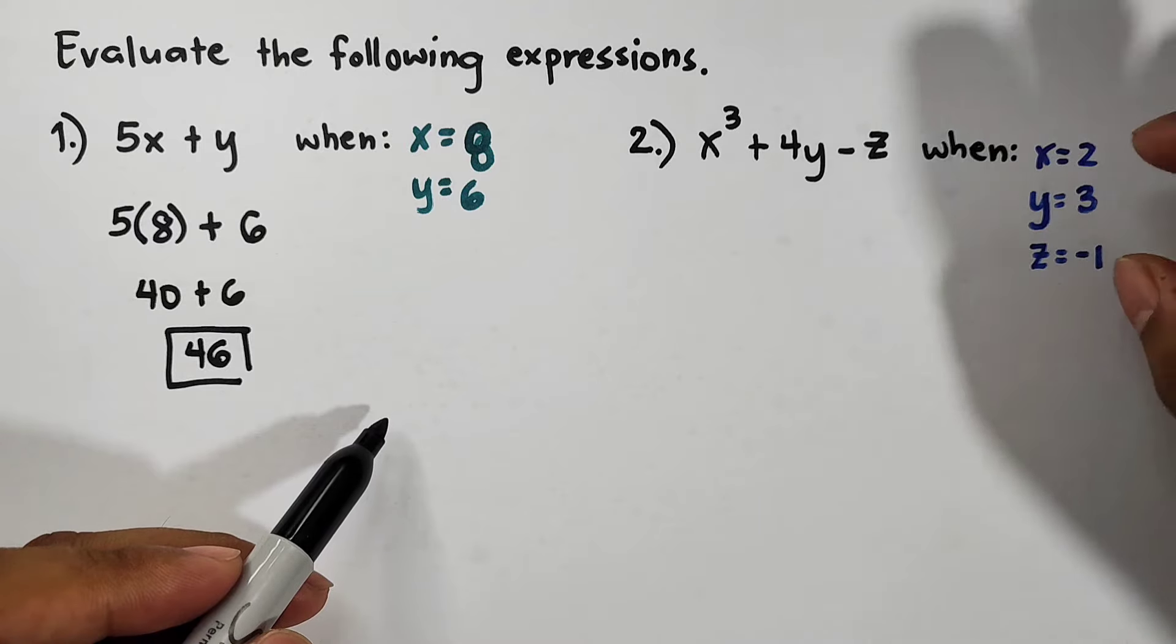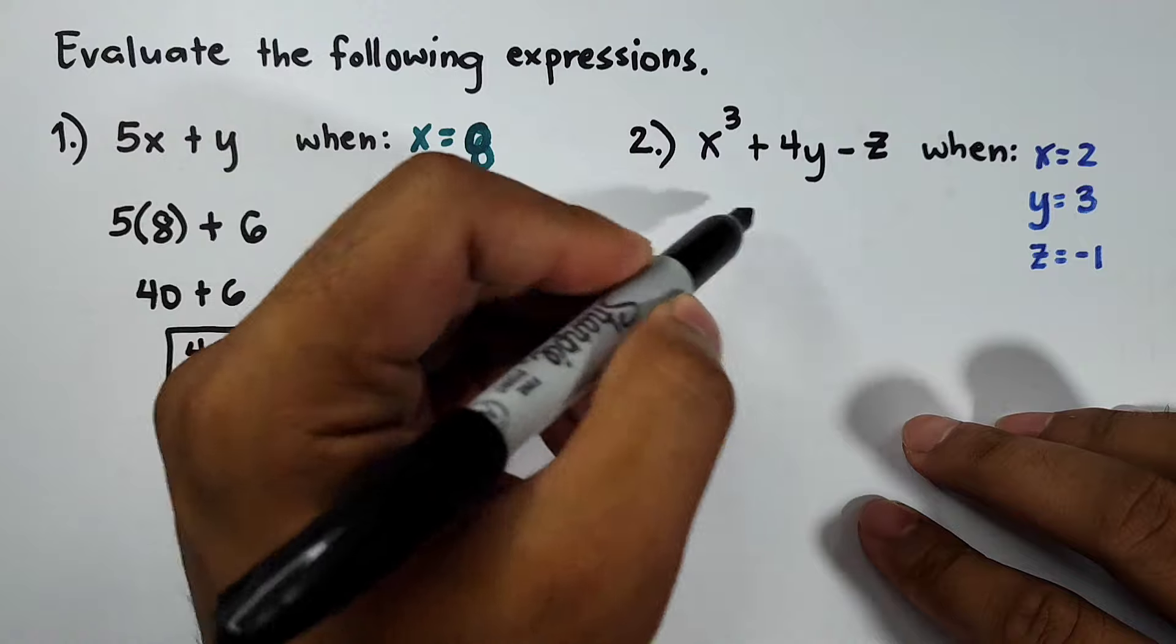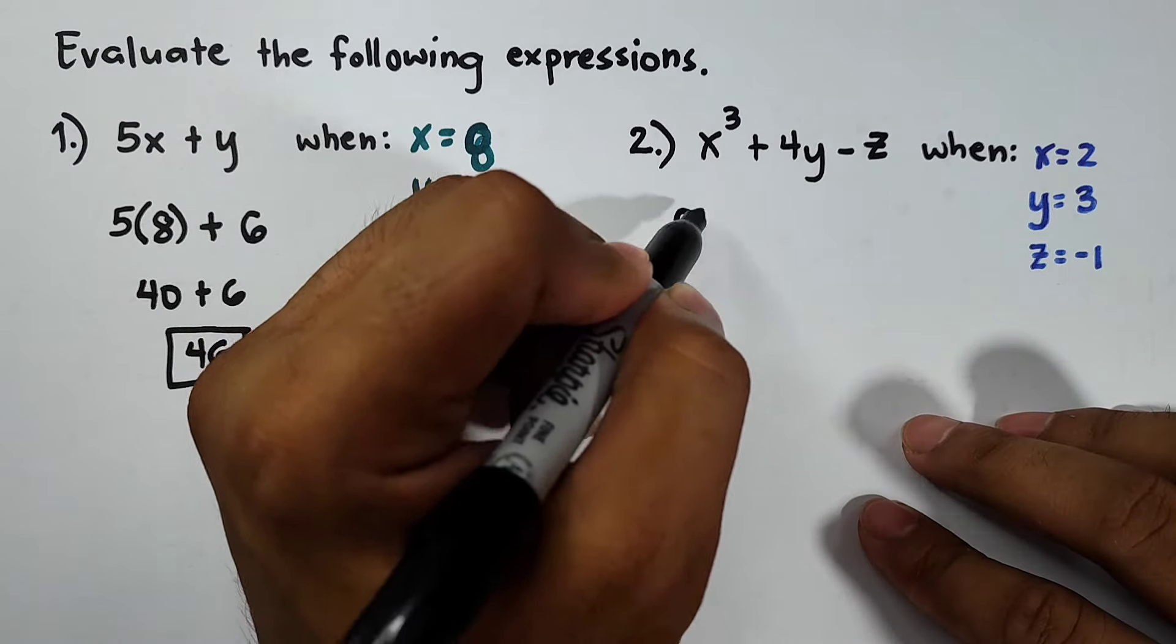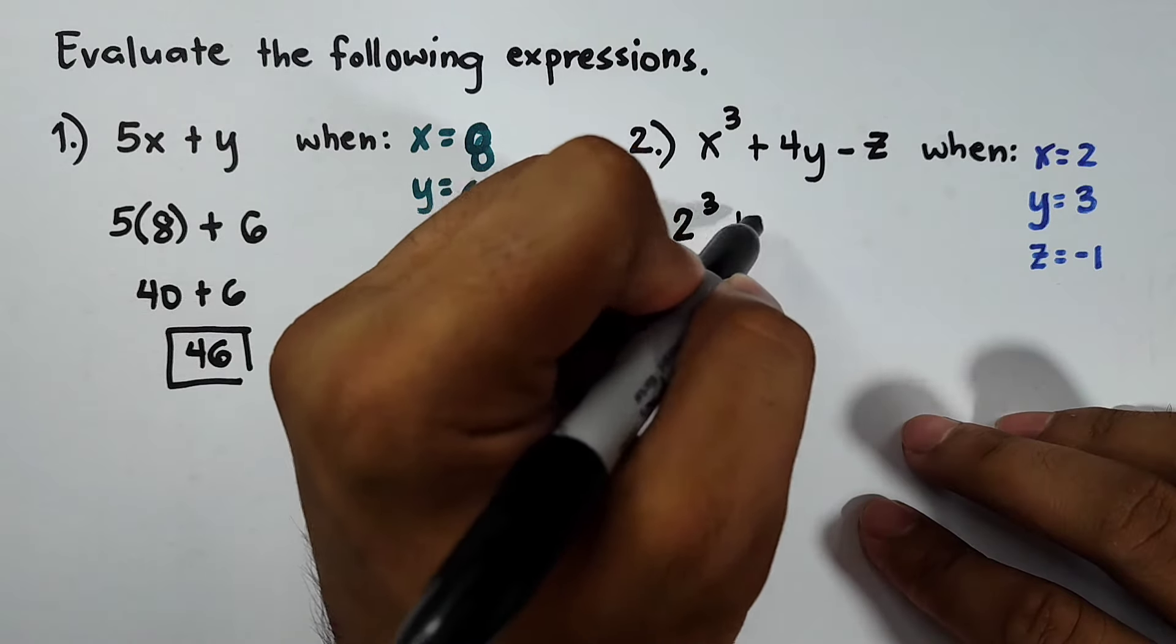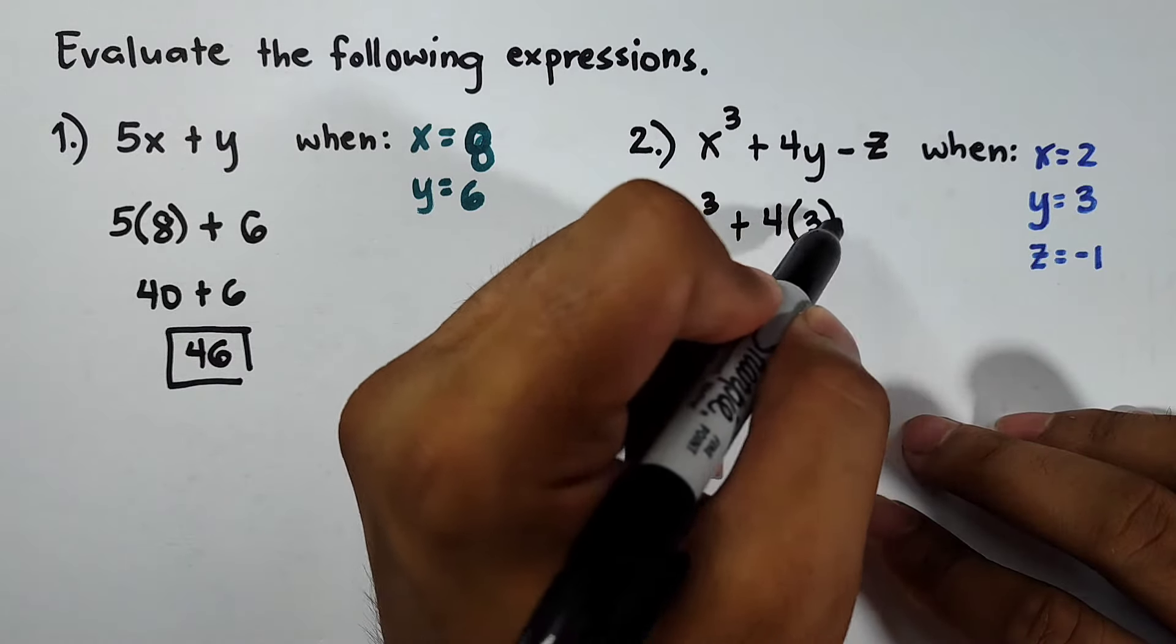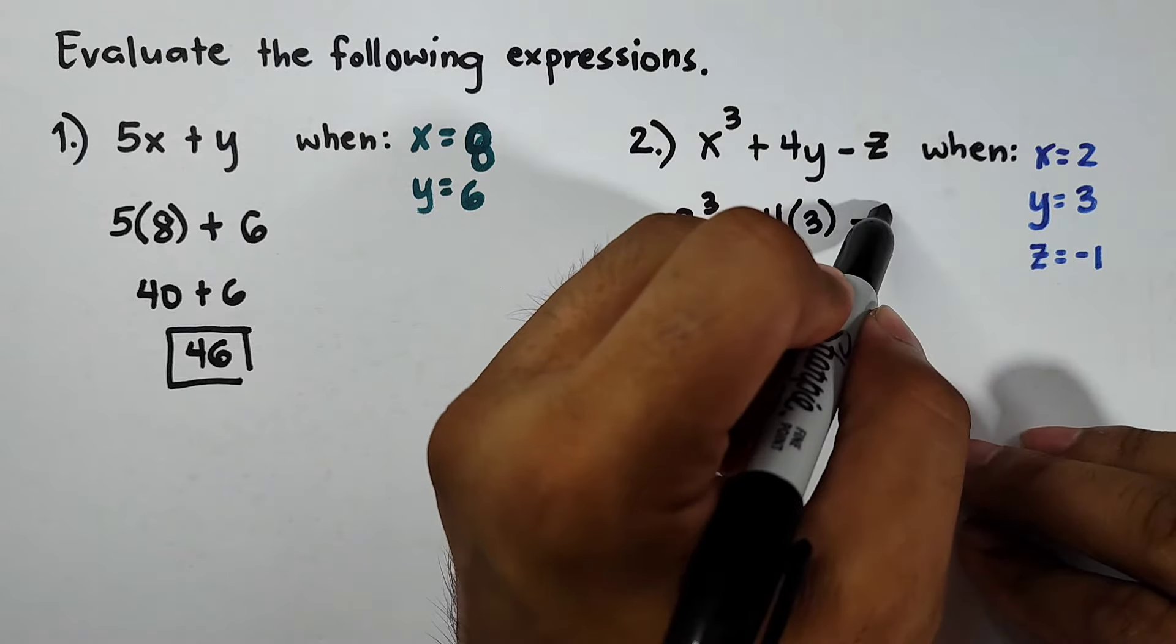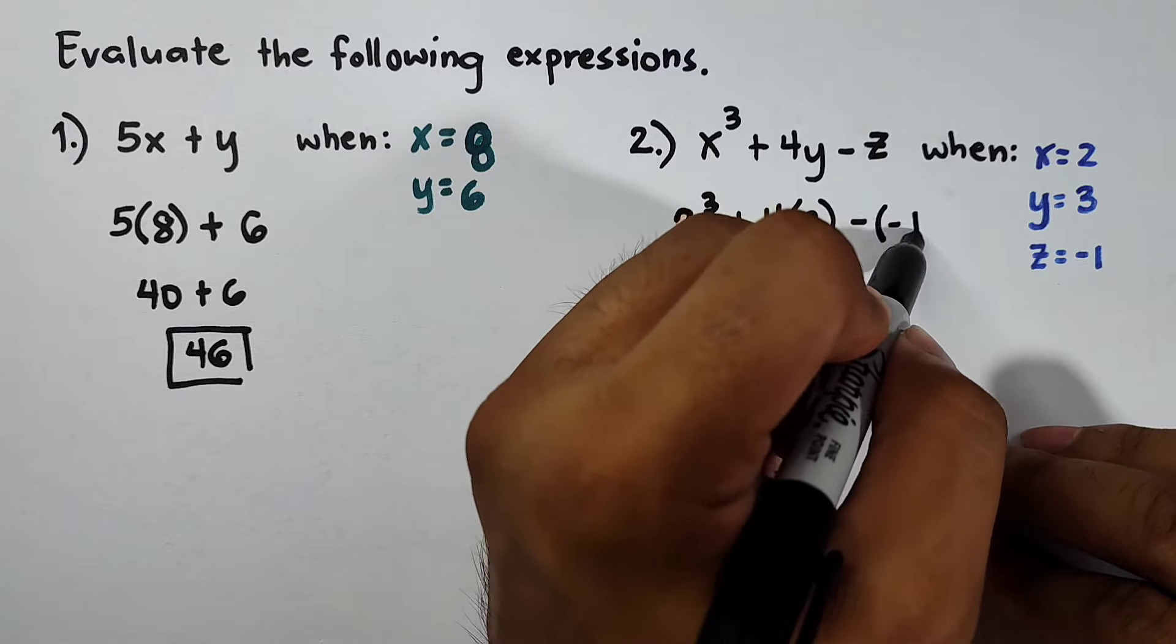Let's replace all these variables using these values and it goes like this. For x is equal to 2, it will become 2 cubed plus 4 times your y which is equal to 3, so 4 times 3, minus since your z is negative, put it inside the parenthesis, it will become negative 1.